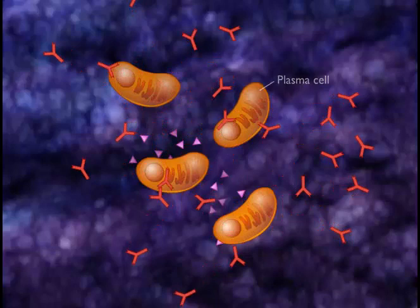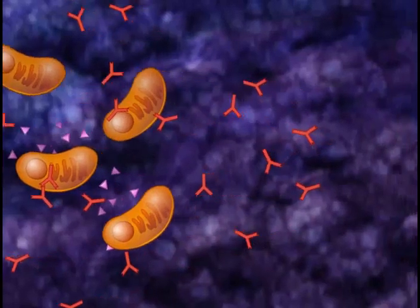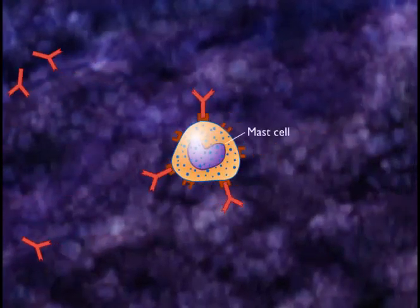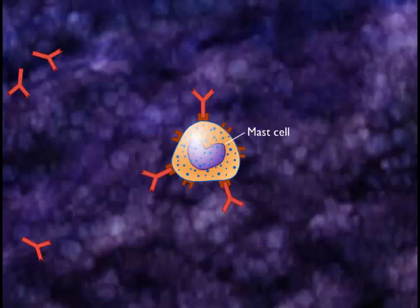As IgE is produced in specific areas of the body, the IgE molecules attach via their constant regions to receptors on nearby mast cells. Mast cells contain granules packed with chemicals that induce a hypersensitivity response. Once attached, the IgE molecules can survive for many weeks. The individual is now sensitized to the antigen.